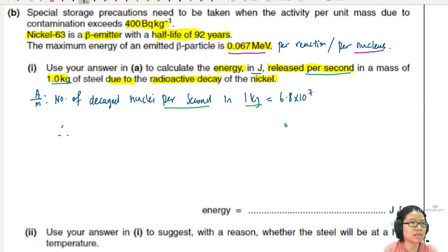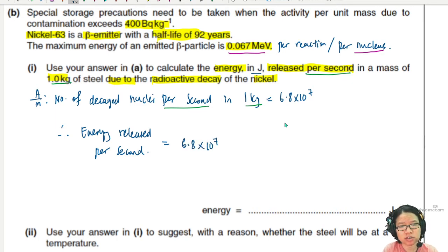A over M tells us the number of reaction or the number of decayed nuclei per second in 1 kg per kg, which was 6.8 times 10 to the power of 7. So we know one nucleus releases this much energy. So hence, and then everything is the same. 1 kg, 1 kg per second, per second. So hence, the energy release per second, just multiply. So in one second, I get this many nucleus reacting for the same amount of mass. It's when they trick you and they go and put this one as 500 gram or some other mass that you need to do ratio. But now everything is correct. One second, 1 kg. Everything is the same.